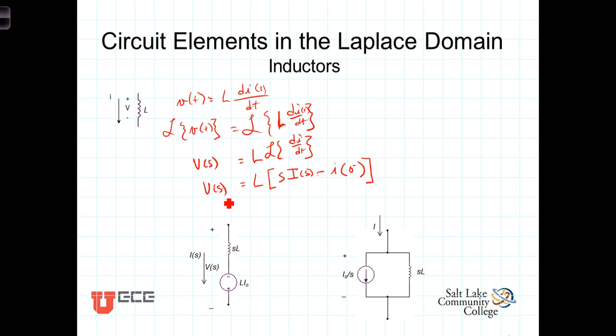In the Laplace domain, the relationship between voltage and current is V of S equals L times the difference of I of S minus the initial condition. We're going to call this I of 0 minus, I naught, the current at 0 minus.